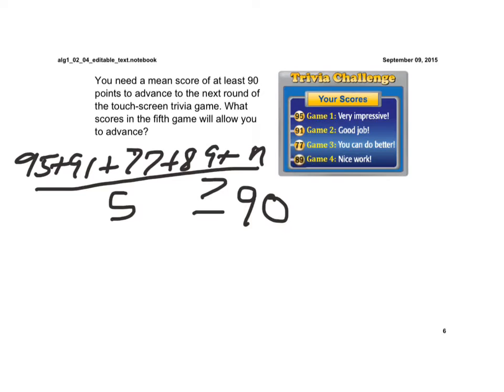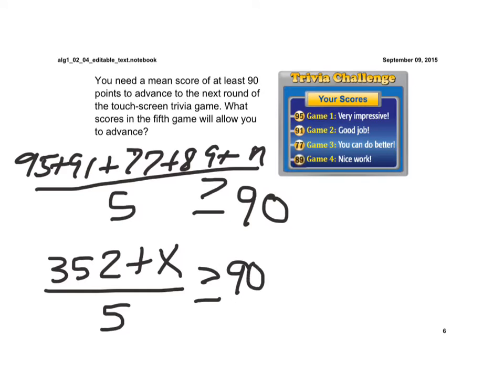So when I add those scores I already have, that's 352 plus x, all divided by 5, because again, that's how we find the average, or the mean.